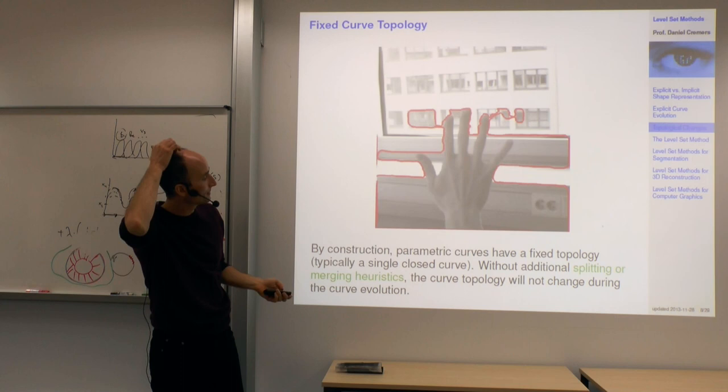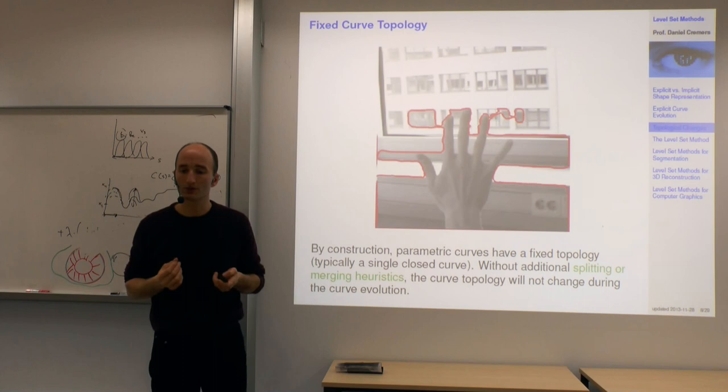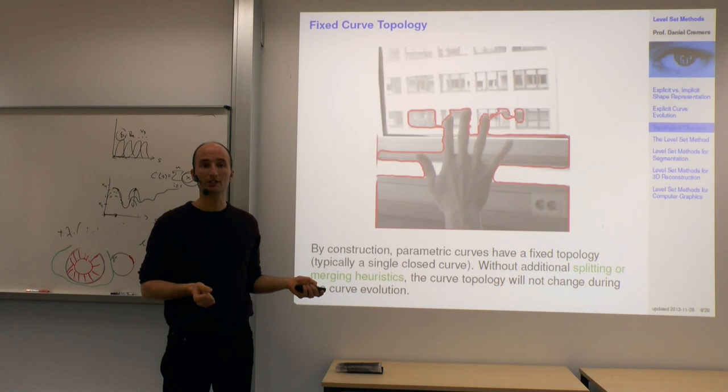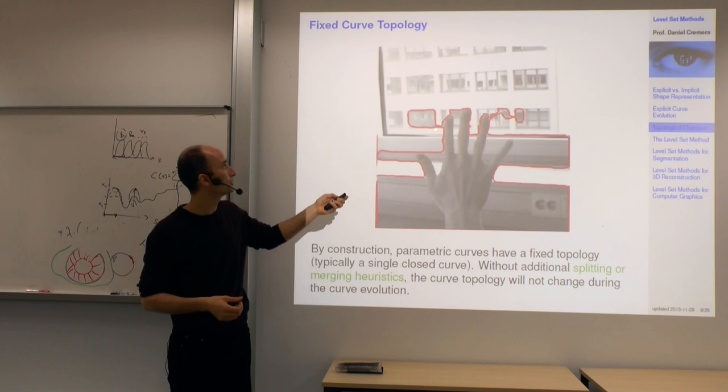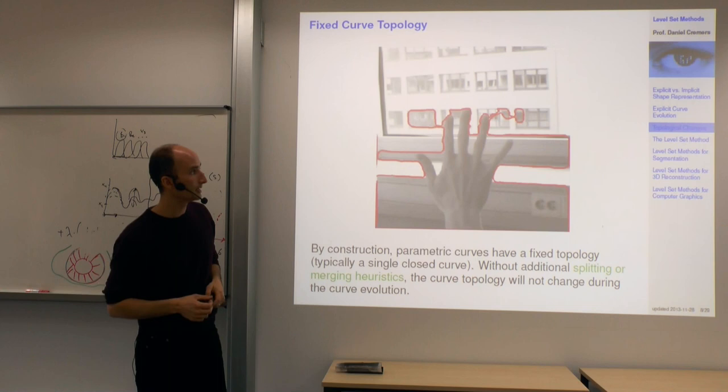And so by and large, if you don't add such a heuristic strategy, parametric curves have a fixed topology. If you start with the simply connected curve, if you move the control points, it's always going to be that simply connected curve. And you will not be able to segment multiple objects in one image. This is where the level set methods come in, and this is where we'll continue next time. Thank you.